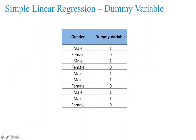For example, say you have a single input variable called gender, which has discrete data. You need to convert this to a dummy variable: male equals one, female equals zero. Wherever you have a male you substitute one, wherever you have a female you substitute zero. This dummy variable should then be used to build the prediction equation.